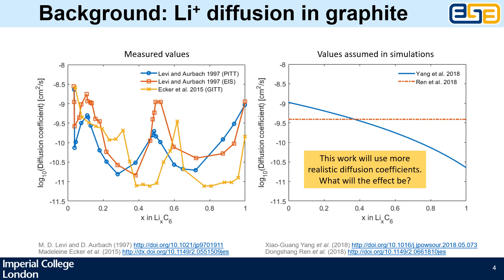There are three different measurements by three different methods of the diffusion coefficient of lithium ions in graphite versus the degree of lithiation. As you can see, all of them have these spikes which correspond to the phase transitions between different stages of lithiation. On the right are the assumptions used in the simulations, which don't have these spikes at all. So in this work we're going to use more realistic diffusion coefficients.